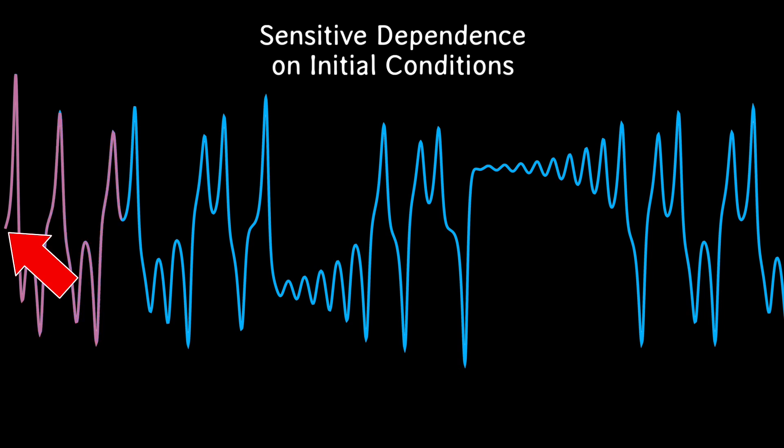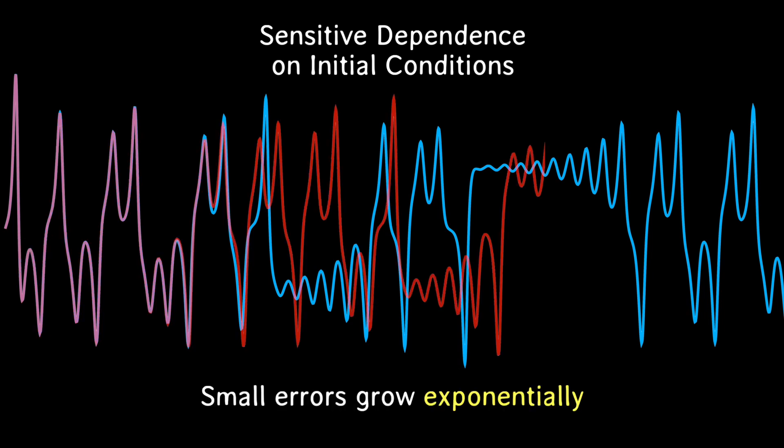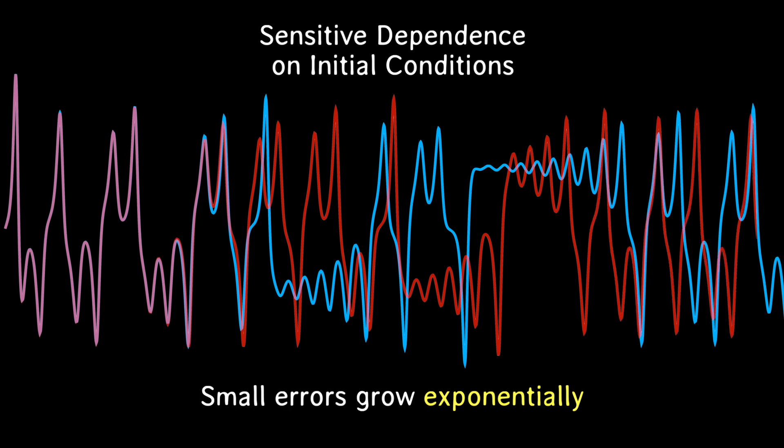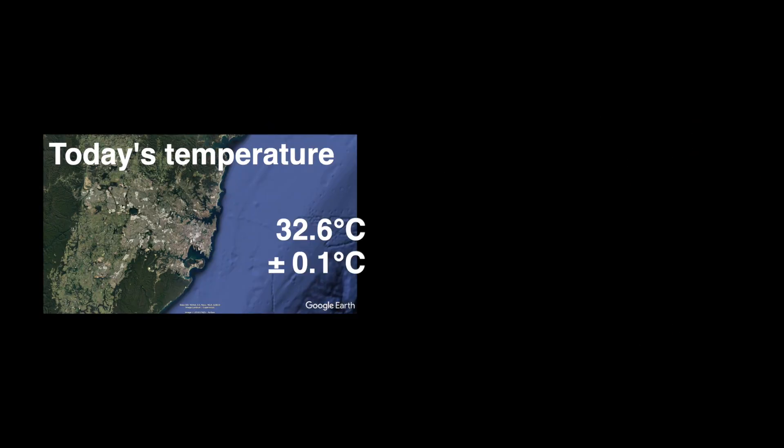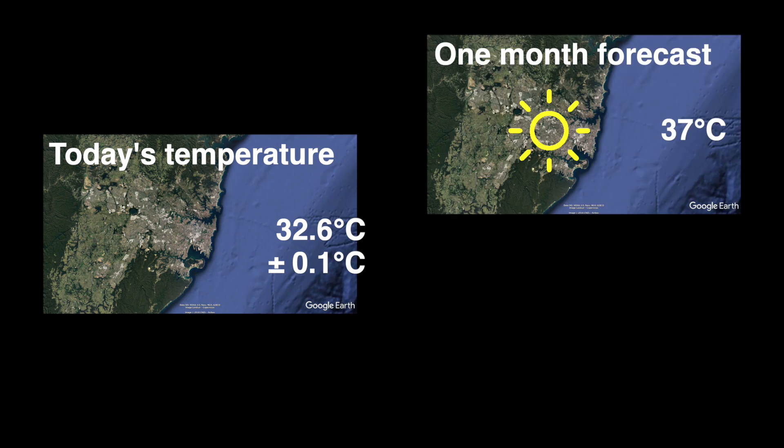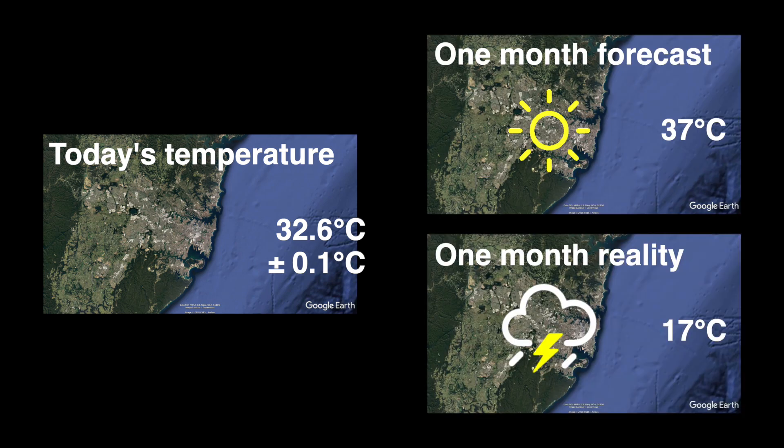He'd stumbled over what became known as sensitive dependence on initial conditions. If you change the starting point by even a tiny amount, the system quickly evolves to a totally different state. Or, in the case of the weather, a tiny measurement error in the temperature today means your forecast for next month can be very wrong indeed.